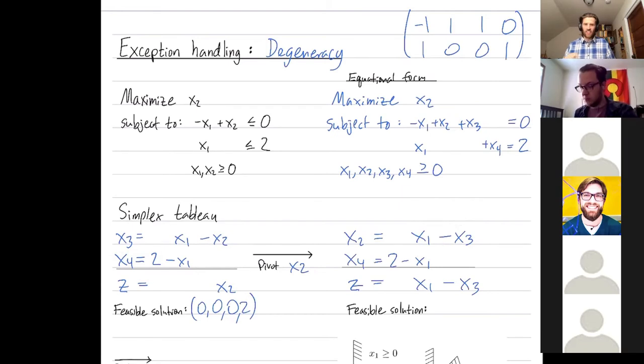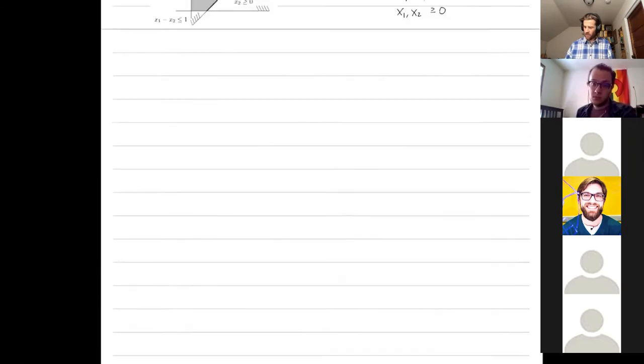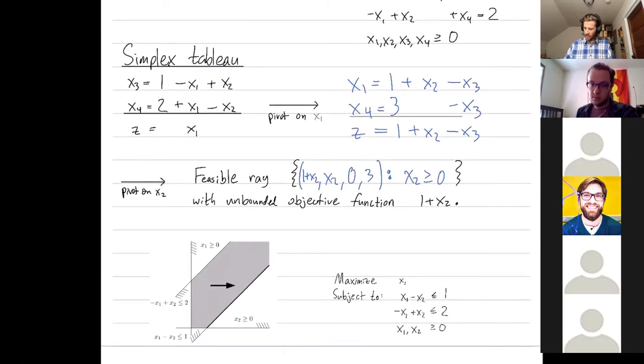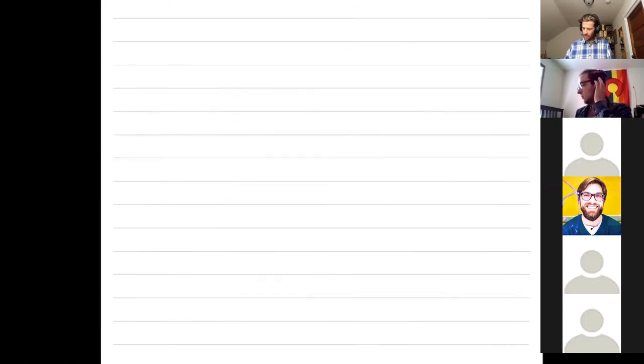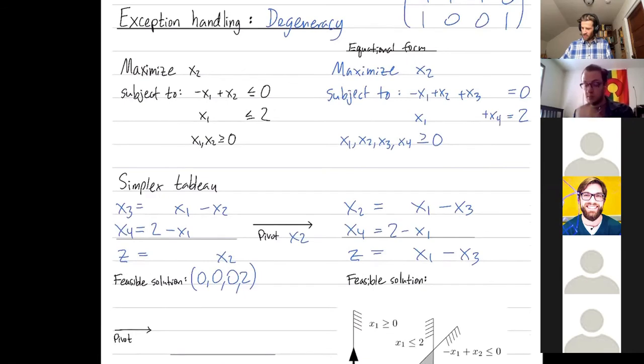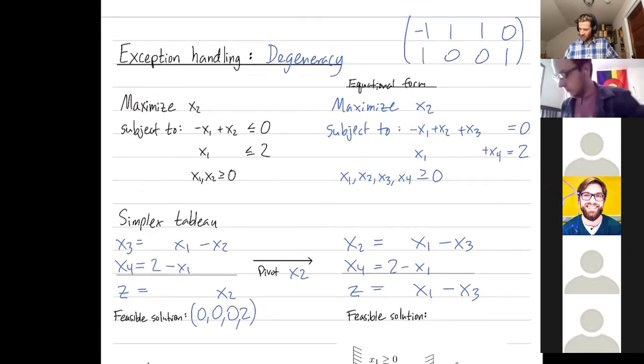What's interesting is usually when you pivot, you move your feasible solution, right? In the prior video, when we pivoted, we moved from this feasible solution to that one. Here, we're still going to be at the same feasible solution after we pivot. So our non-basic variables, x1 and x3, better both be 0. And then what about our basic variables?